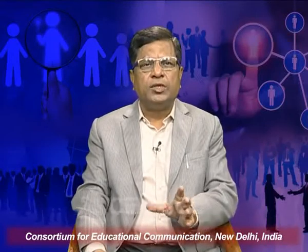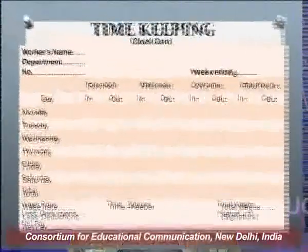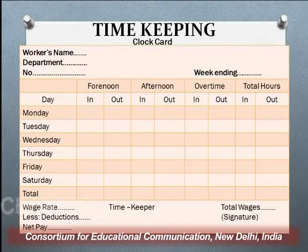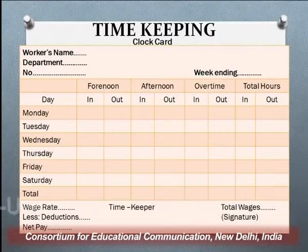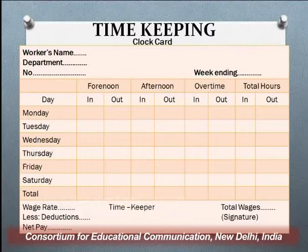This is the performa of the clock card. On the left hand side: worker's name, department, number, and week ending. For each day from Monday to Saturday, columns record forenoon in time and out time, afternoon in time and out time, and overtime in and out — meaning extra hours put in — plus total hours. The time keeper checks it, the wage rate is recorded by the cost accounting department, and net payable wages are calculated. The lower part of the clock card is maintained and recorded by the cost accounting department.